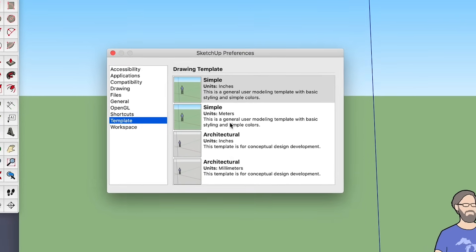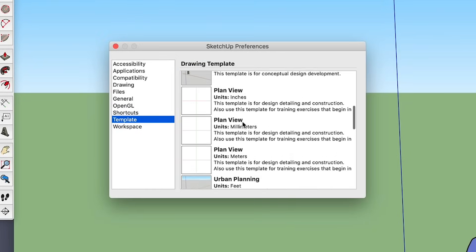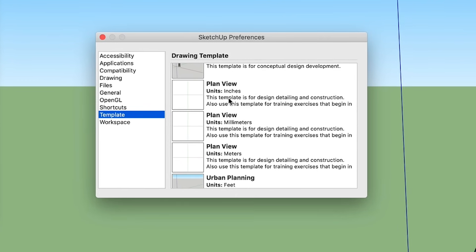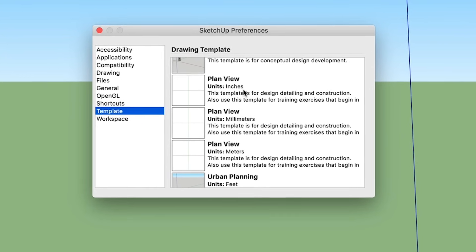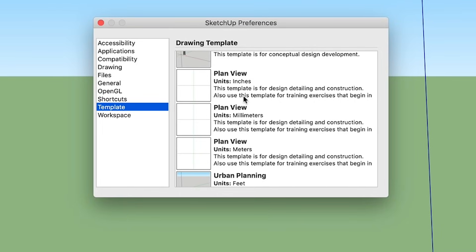Depending on what version of SketchUp you're using, the template will be named differently. It might say Plan View or Construction Documentation. Just make sure that the thumbnail has a white background like this one here, and that you choose feet and inches or meters depending on which you use for your projects.